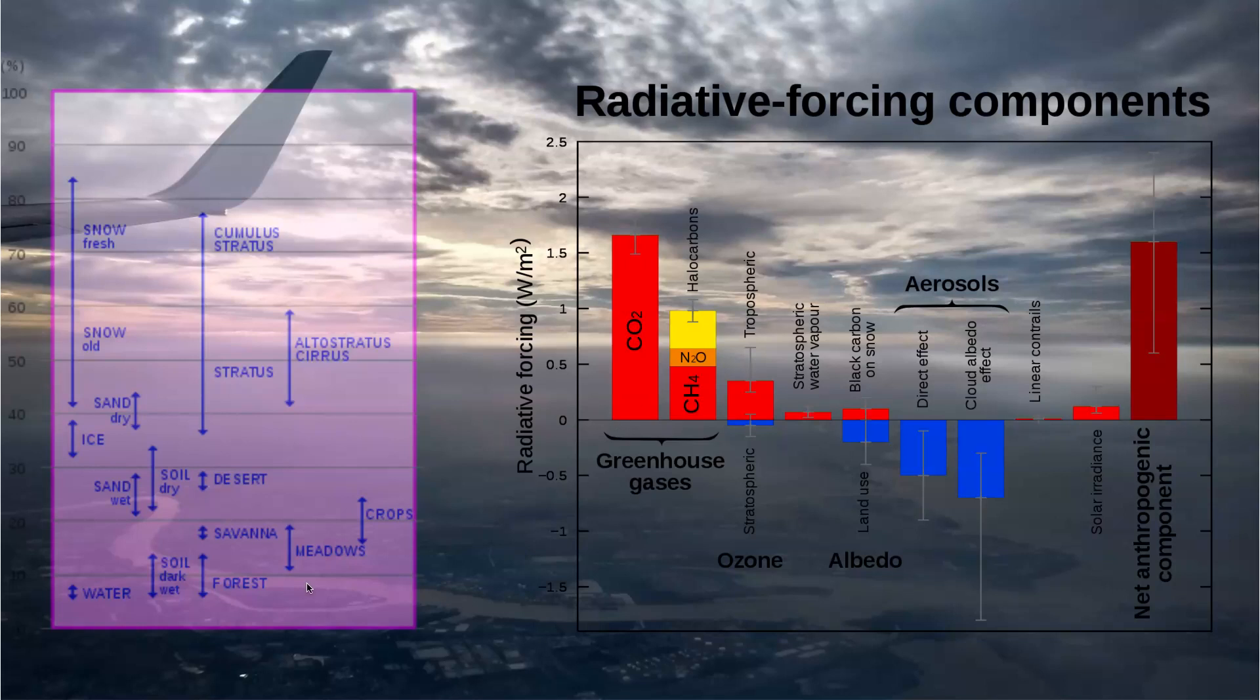Also, changing from forest to crops increases the reflectivity, so that has a net cooling effect. And that's to do with this land-use one, that albedo. But obviously the main warming effects are the greenhouse gases here.